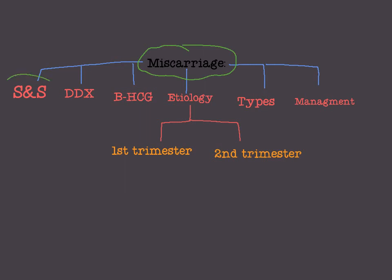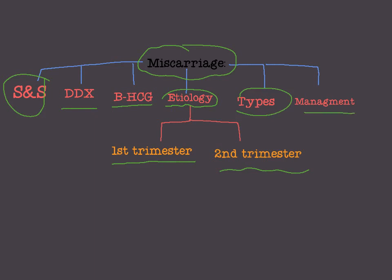In this lecture, I'm going to talk about signs and symptoms, then differential diagnosis, then beta HCG — human chorionic gonadotrophin — then the etiology of miscarriage, covering the most important causes in the first and second trimesters, and finally the types of miscarriage and their management.